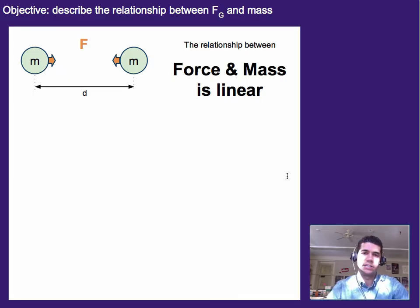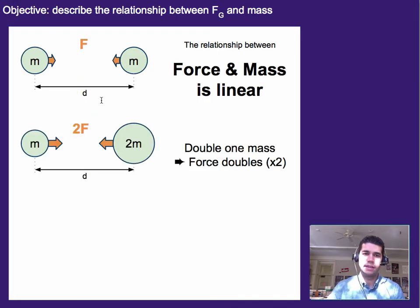So let's look at what is the relationship described by this equation. Between force and mass, the relationship is linear. What that means is if we have two masses and there's a force between them because of their mass, so gravitational force, and their separation distance of D, then if we double one of those masses, the force becomes twice as big as well.